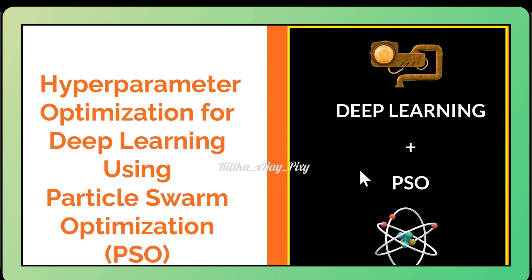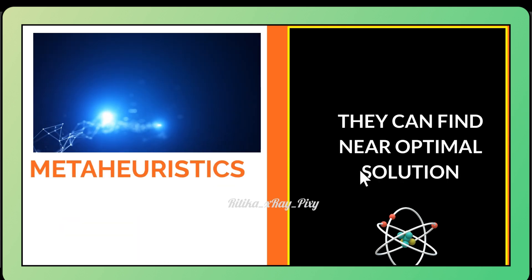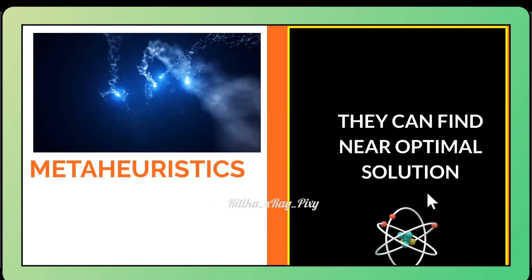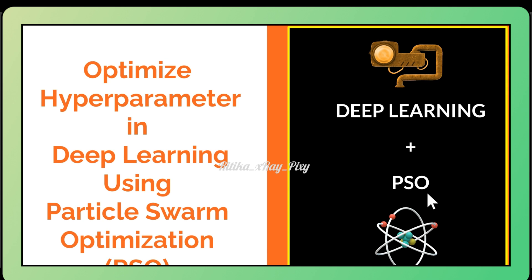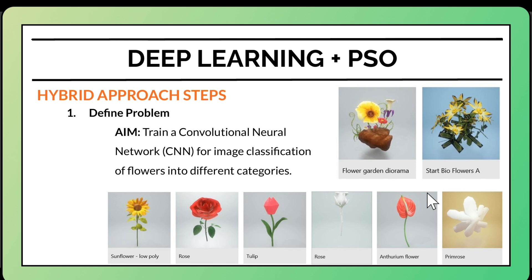By combining meta-heuristic algorithms with deep learning we can create powerful hybrid approaches for solving complex real life problems. Meta-heuristic algorithms can find near-optimal solutions for difficult problems using an iterative process. In this example, we optimize the hyper parameters in deep learning using PSO. We define the problem: using CNN to identify different types of flowers from images, with the goal of finding the best hyper parameters to maximize the model's accuracy.